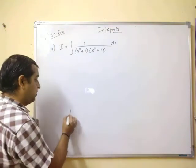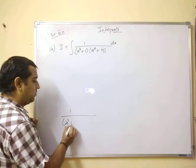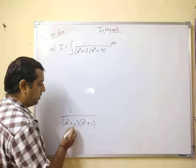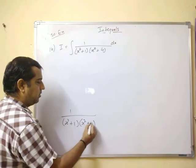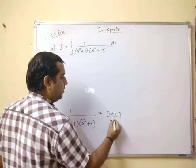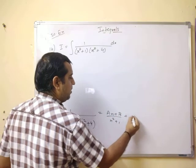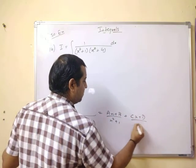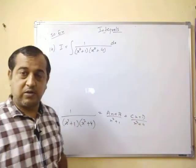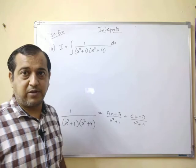You can write this as 1 upon x square plus 4 and x square plus 1. You are having two factors, take 1 here and 4 here, as ax plus b upon x square plus 1 plus cx plus d upon x square plus 4. One method is this, which is the method you have studied in your partial fractions.